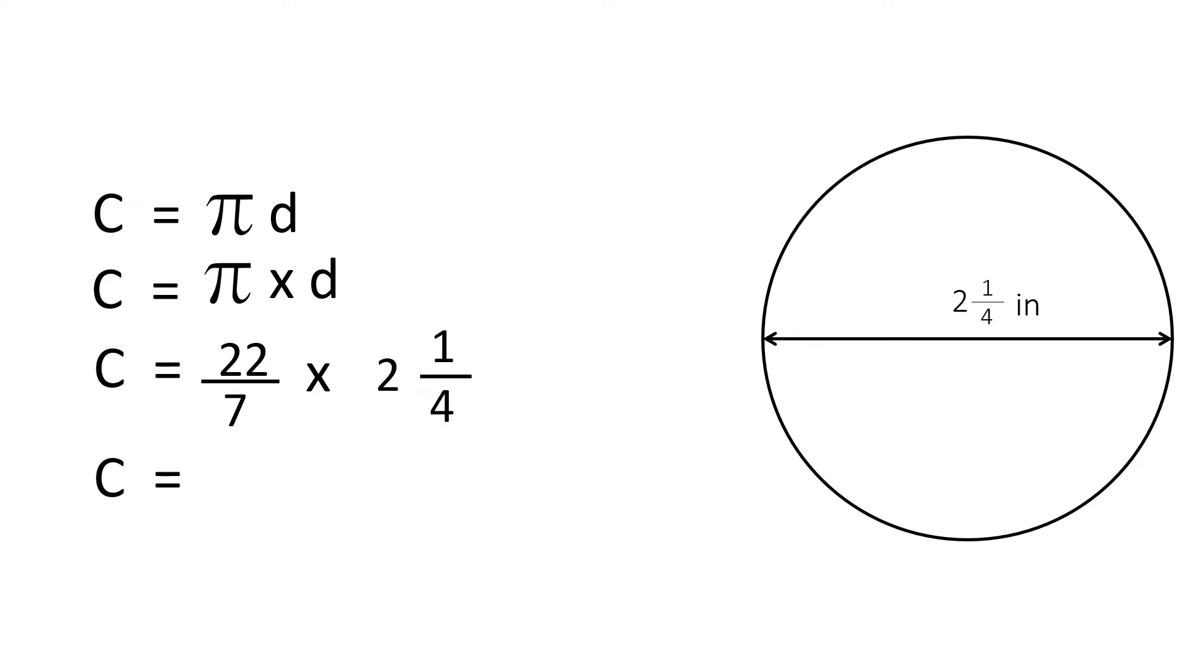However, we cannot multiply mixed fractions. We will have to take 2 and 1 quarter and make it into an improper fraction. So, the denominator stays the same, it's going to be 4. We take 4 times 2, which is 8, plus the top number, 1, and the answer will be 9.